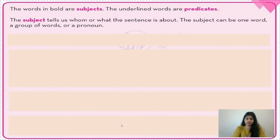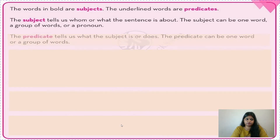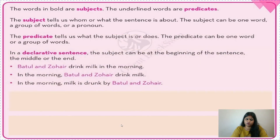The subject can be one word, a group of words, or a pronoun. For example, 'He is a good boy' — 'he' is a pronoun and it is the subject. More than one word can also be a subject: 'Ram, Shyam and Mohan are best friends' — all three names together form the subject. 'The water in that bottle is dirty' — the subject is 'the water in that bottle,' not just 'water.' Similarly, 'the students of class 6' is the full subject. The predicate tells us what the subject is or does.